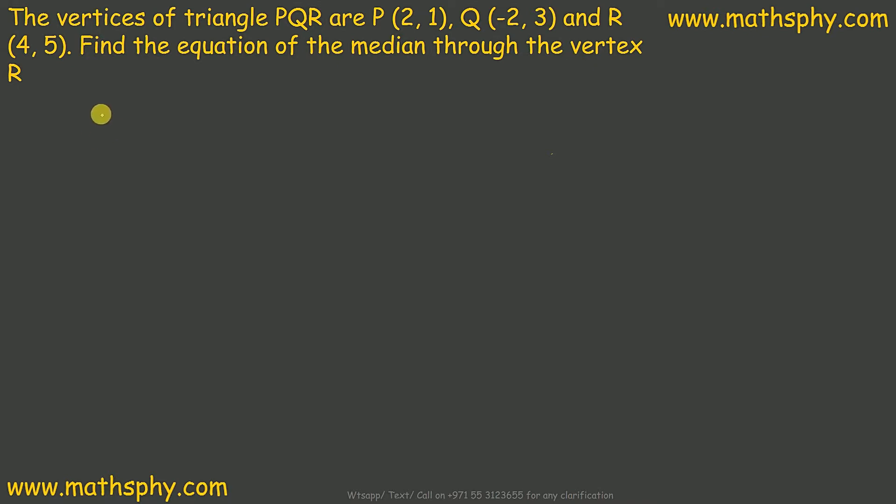Suppose we have this triangle. I take this as P, this Q, and this is R. This says median through vertex R, so this is my median. Let's take this point and say P. P is (2, 1), Q is (-2, 3), and R is (4, 5). This is the median.